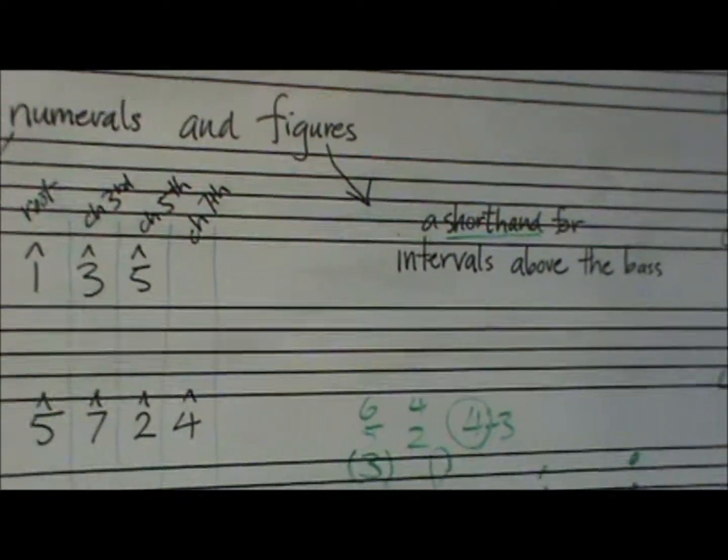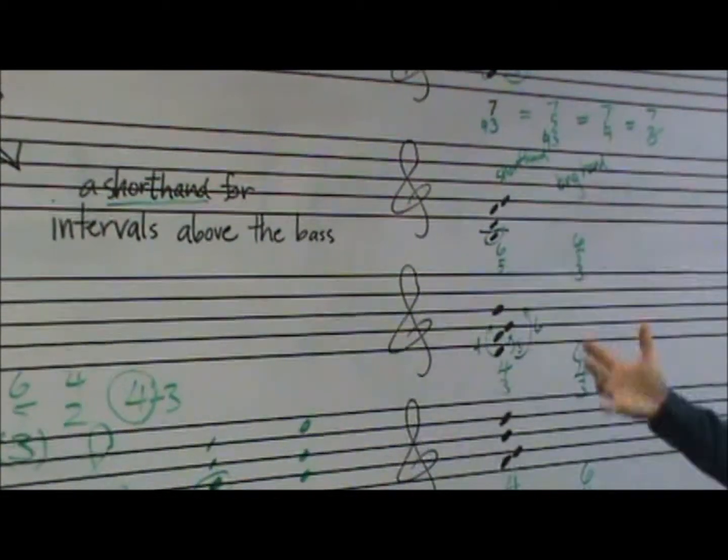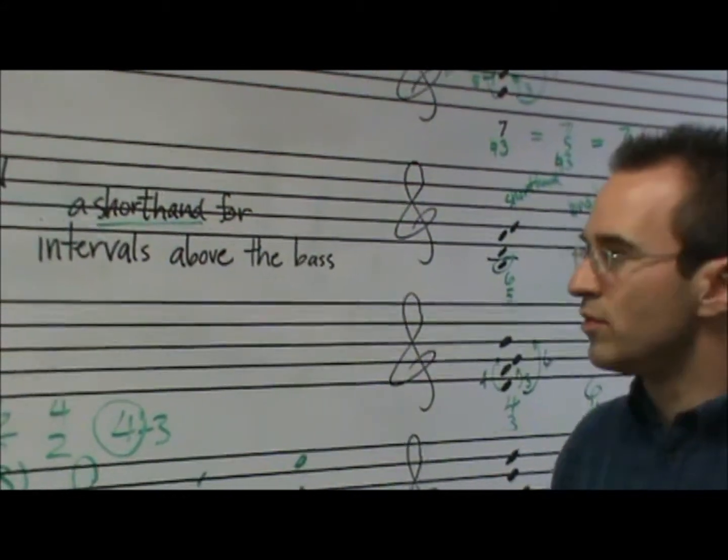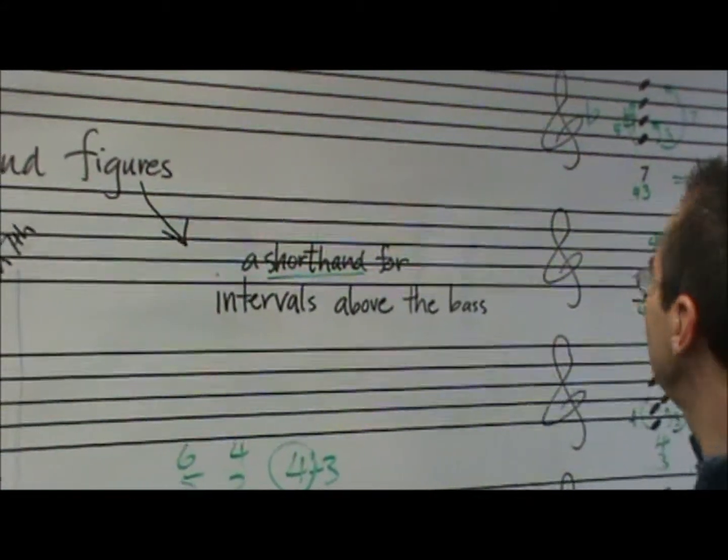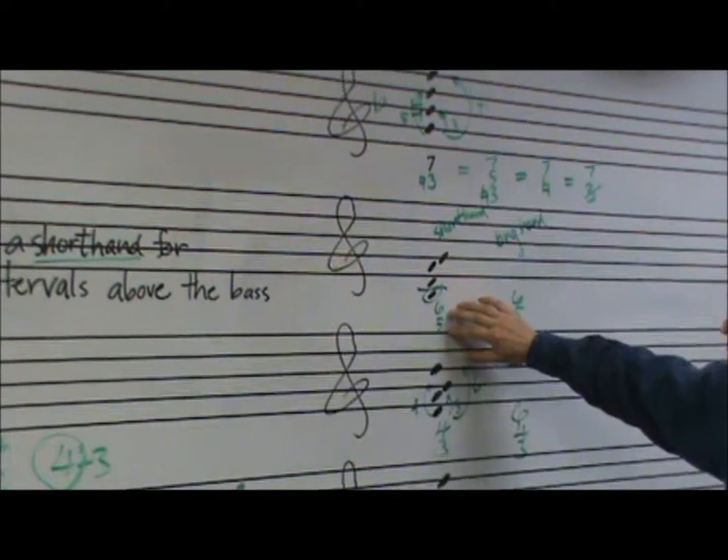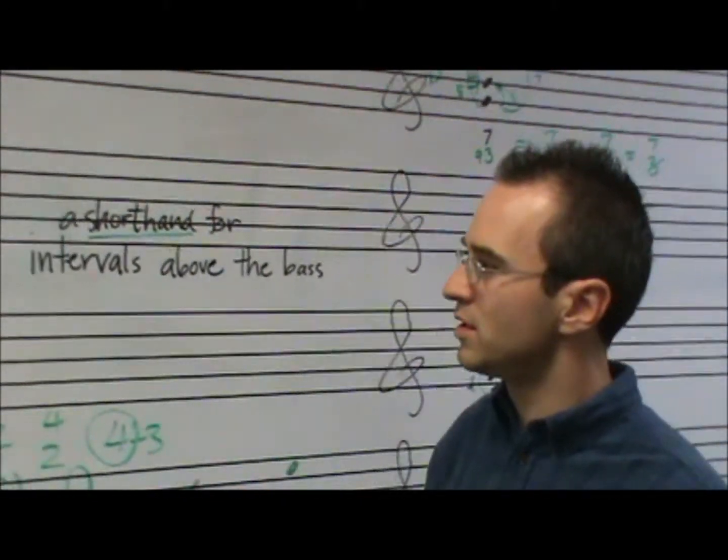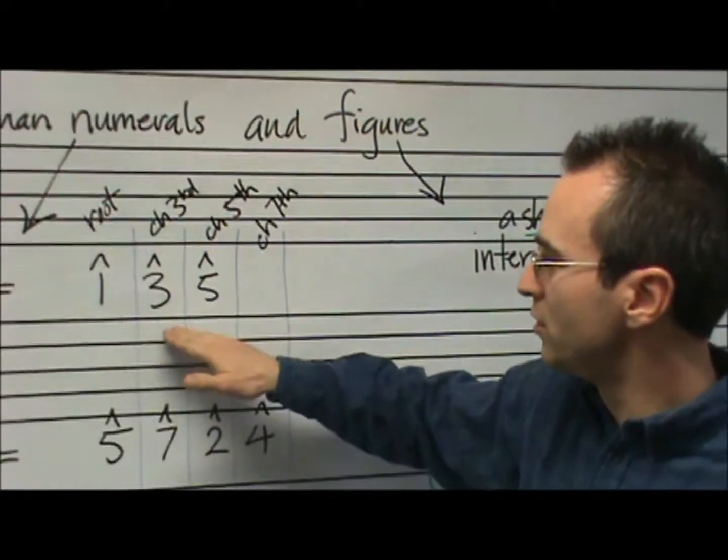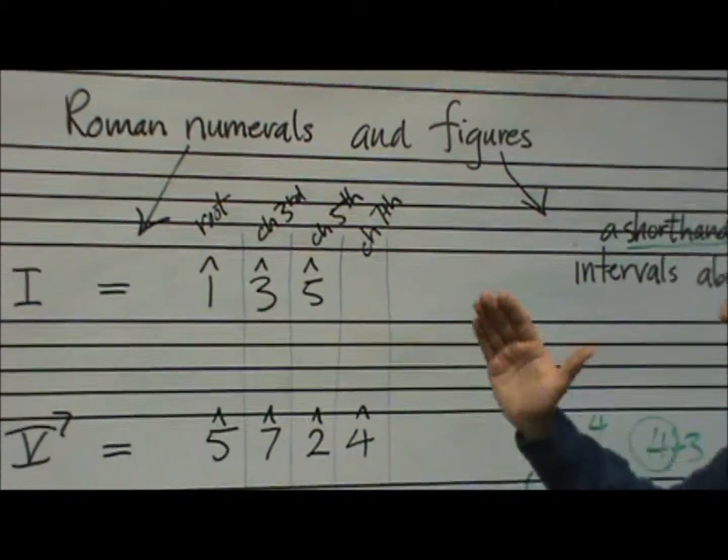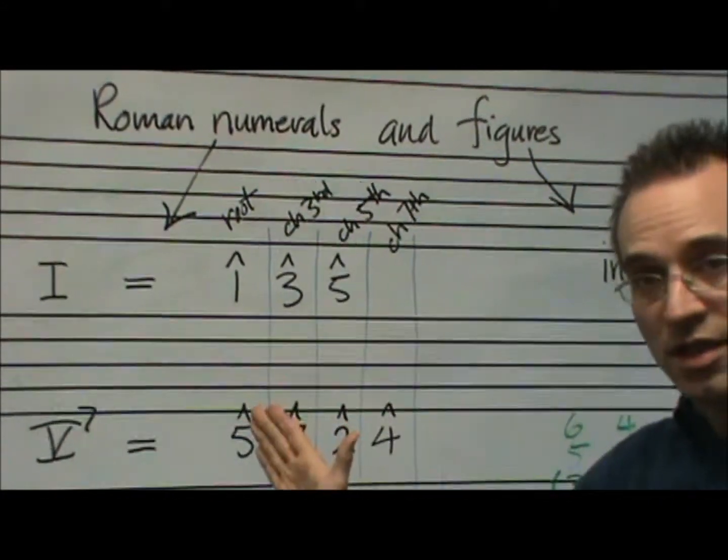And we've got other intervals, these Arabic numerals, the figures: six, five. There's so many that we're going to have to keep track of what each of these is. So again, I'm going to say figures, six and five, meaning intervals above the bass. If we talk about scale degree three, then we mean an interval from the tonic.